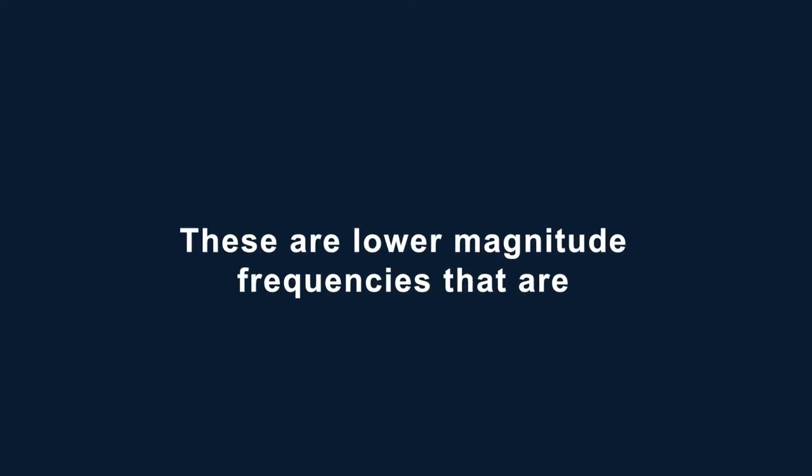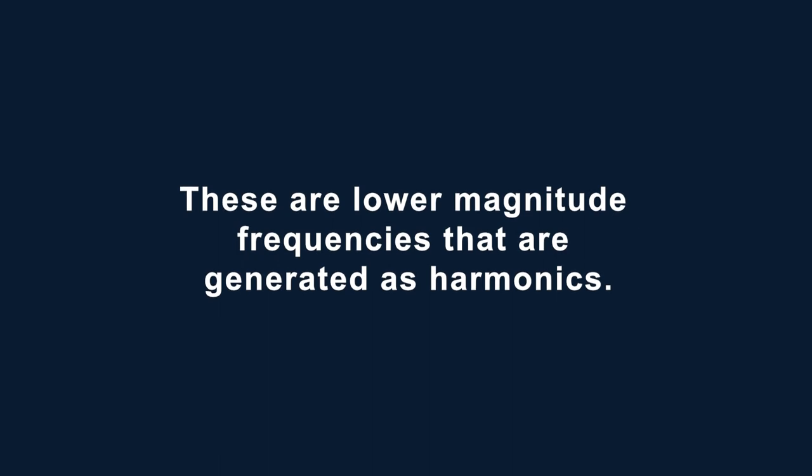If you need to develop an oscillator at higher frequencies that will still be robust enough to operate in the field, we can look at using one of the other resonant frequencies. These are lower magnitude frequencies that are generated as harmonics. These harmonics will all be at odd integers of the fundamental frequency. Therefore, a crystal unit with a fundamental frequency of 10 megahertz can also be made to oscillate at 3, 5, and 7 times the fundamental frequency — so at 30, 50, and 70 megahertz. These multiples of the fundamental frequency are called overtones and are identified by the integer of multiplication.